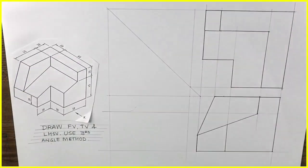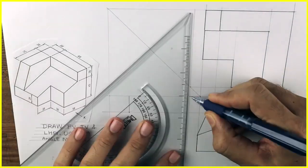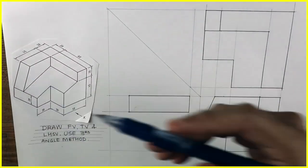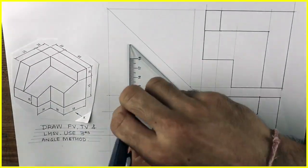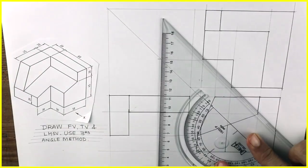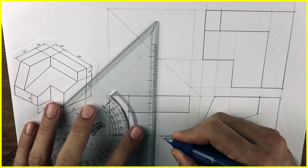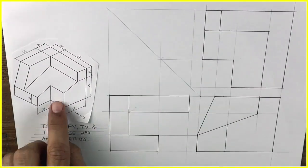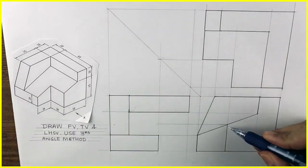We'll project from front view. We'll mark the distance or we can take it from top view. After that we'll project this rectangle, the bottom one. See this. Then this one.